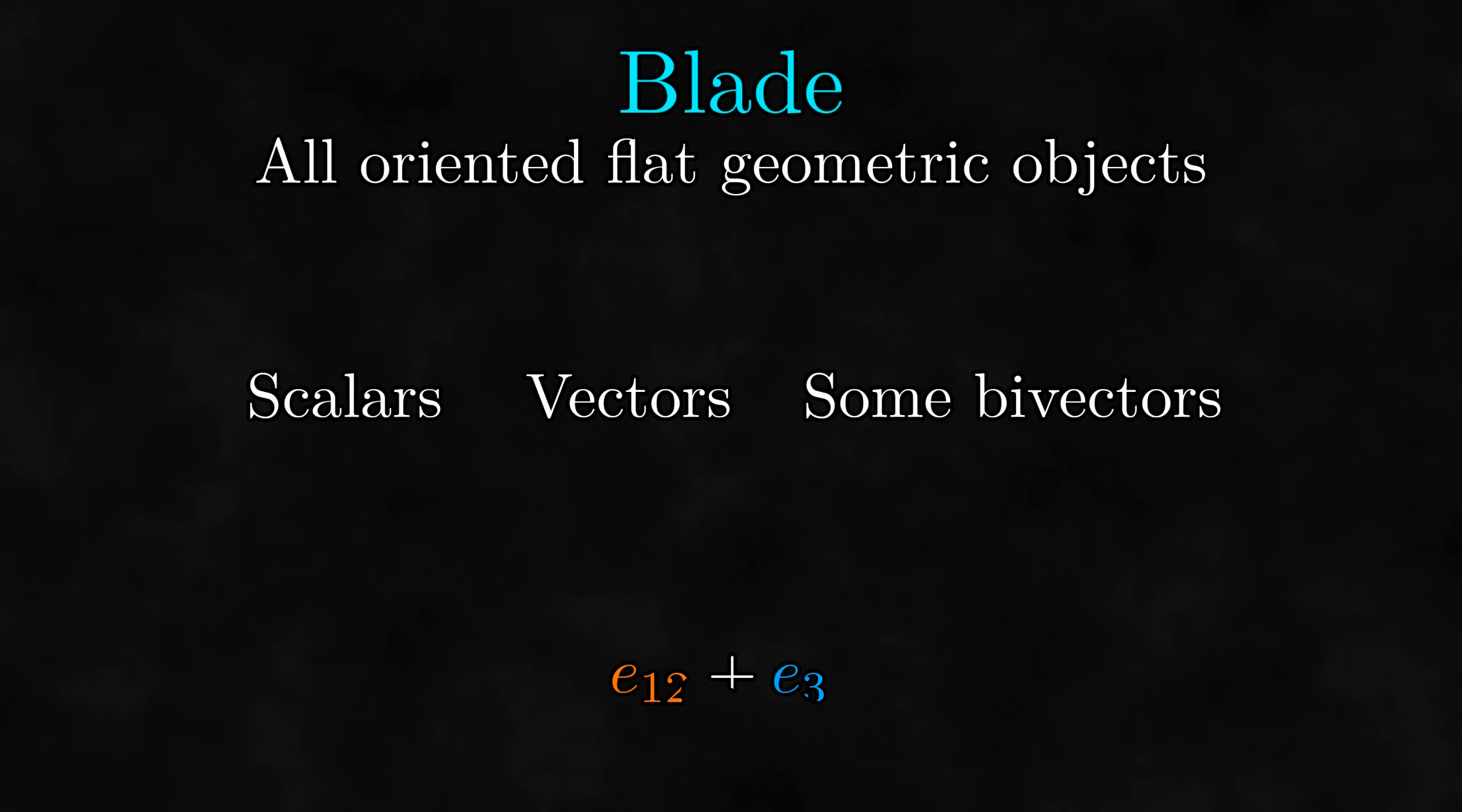But any time we add two different blades that don't mesh well, we get something that is not a blade. So while 3, 2E1 plus E2, and E12 plus E23 are all blades, 4 plus E1 and E12 plus E34 are not.